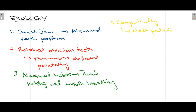Thirdly and importantly, abnormal habits in children can also lead to crossbite. Thumb sucking up to three years of age is normal, as is mouth breathing, but if it exceeds this time period crossbite can develop. When sucking the thumb, the buccinator muscles on the cheeks exert pressure on the maxillary arch, causing it to constrict transversely so the maxilla becomes smaller than the mandible, leading to crossbite.